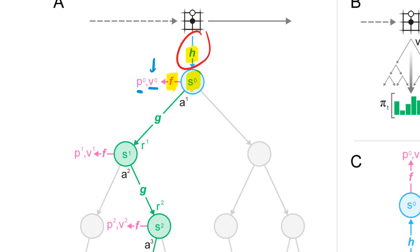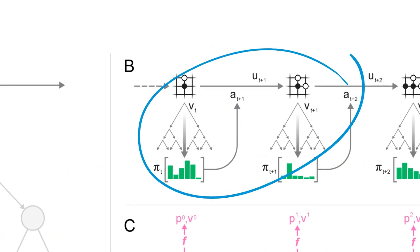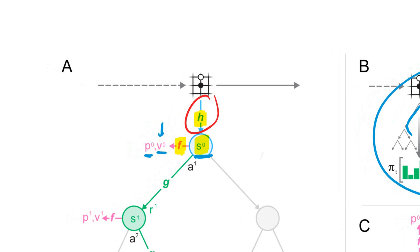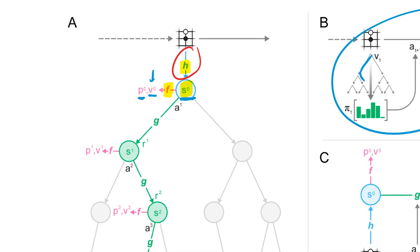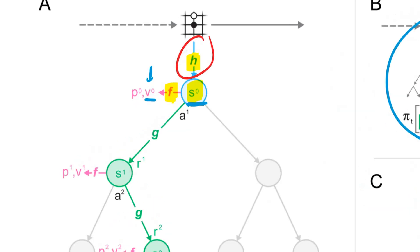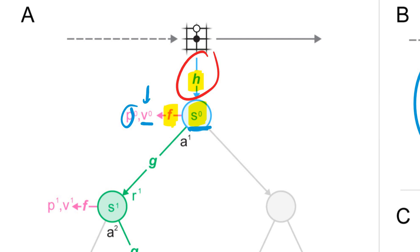From this hidden state you do two things. First, using function f, you predict the value function — how much reward you'll make on average in the future from this state with your current policy, essentially how good it is to be in that state. Second, you predict the policy, which approximates how you would act in this state. This is a bit confusing because MuZero actually decides actions via a full tree search, so this policy is a fast single-evaluation approximation used within that tree search.